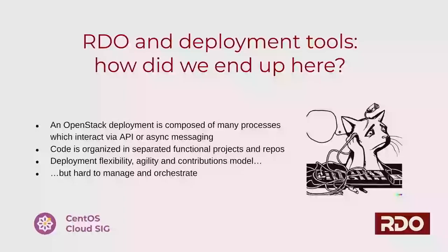All those services communicate with each other through standard REST APIs or asynchronous messaging. Another important factor is that the code for all these processes is distributed among different projects and repos. OpenStack has about 40 functional team projects — each a group of people responsible for one specific system such as networking, block devices, or compute. Right now we have 40 projects and more than 400 repos. Each repo has its own dependencies and packages. This model has proved to be pretty powerful in terms of flexibility and granularity for deployment.